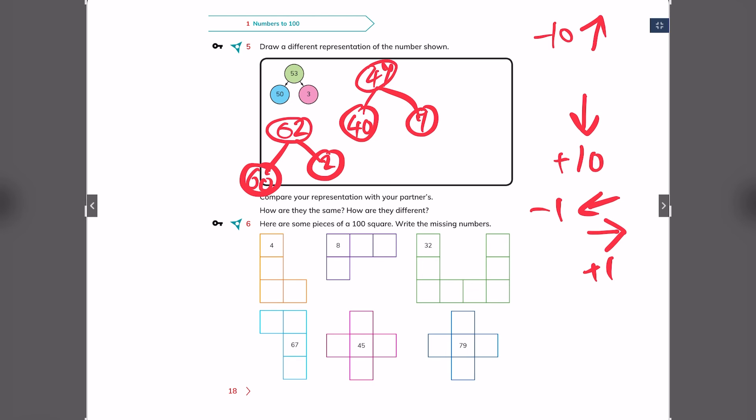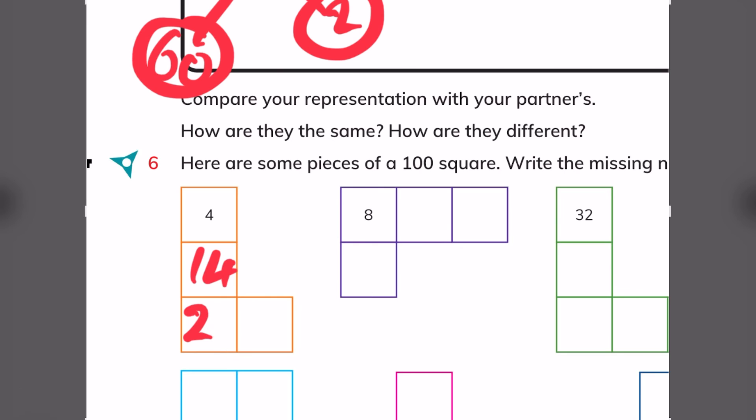So, 4, when you go down, going down is adding 10. Always remember, going down is adding 10. 4, it will be 14. Going down again, 14 plus 10 is 24. Now, when you go to the right, you add 1. Only 1. Add 1 to it, it will be 25. Now, let's do this one. 8 plus 1 is 9. 9 plus 1 is 10. But here, below number 8, we go down one step. So, you add 10. It will be number 18.